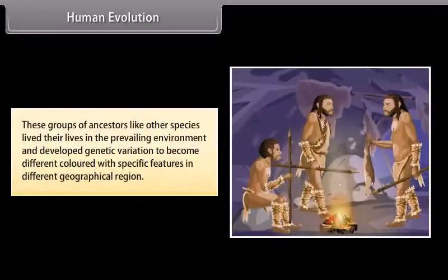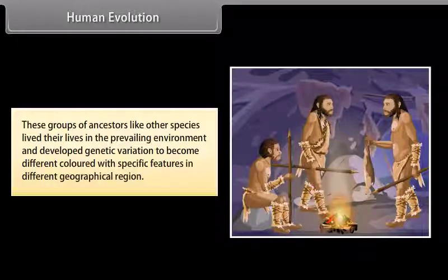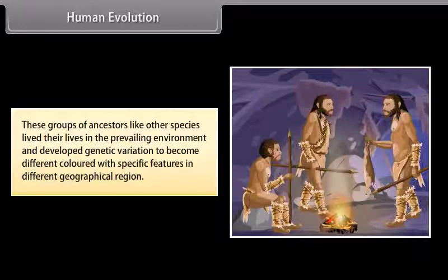These groups of ancestors, like other species, lived their lives in the prevailing environment and developed genetic variation to become different colored with specific features in different geographical regions.